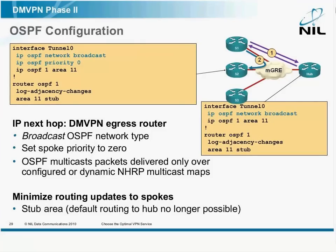OSPF uses network type broadcast. Make sure that the OSPF priority on the spoke routers is zero — a spoke router should never become the OSPF DR or BDR.